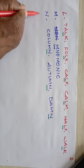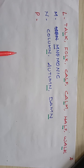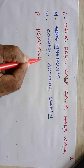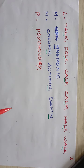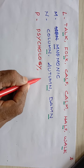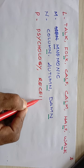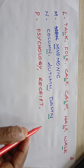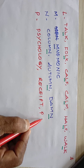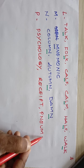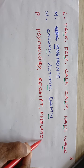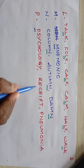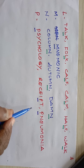P is silent in: psychology — P-S-Y-C-H-O-L-O-G-Y, receipt — R-E-C-E-I-P-T, and pneumonia — P-N-E-U-M-O-N-I-A. Here P is silent in psychology, P is silent in receipt, and P is silent in pneumonia.